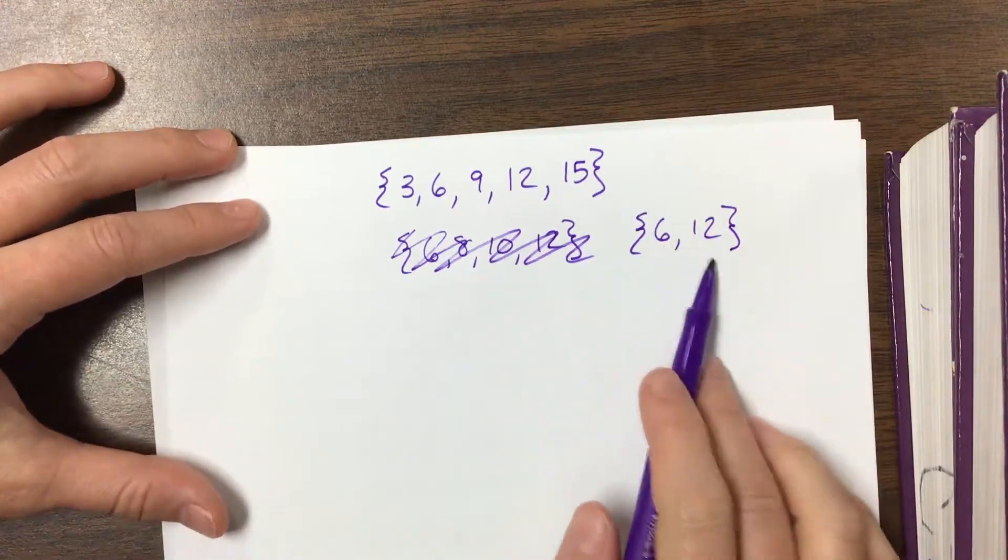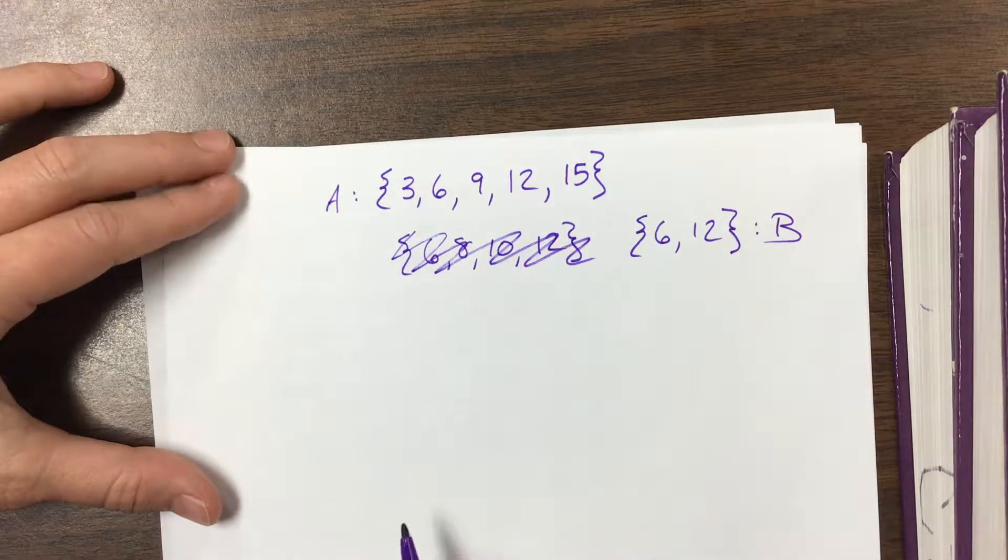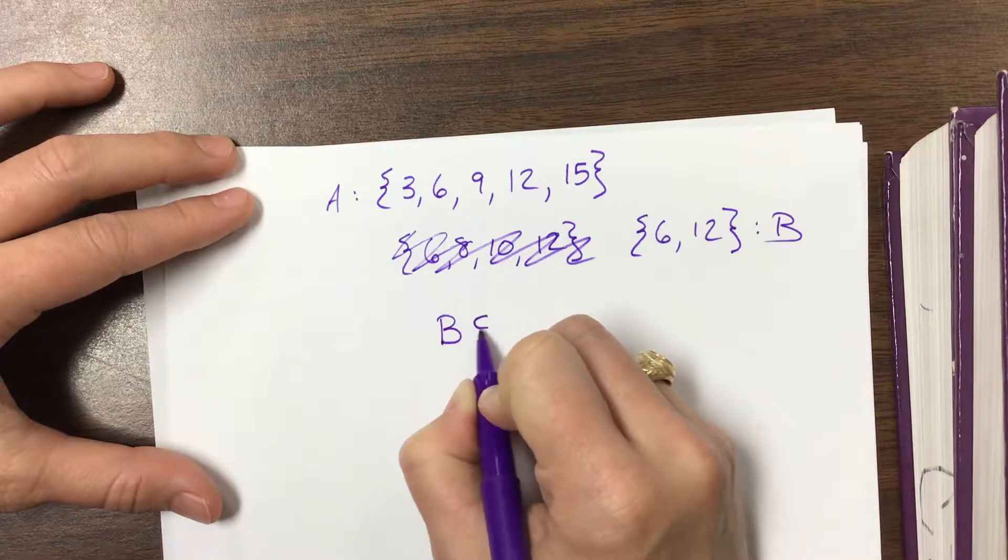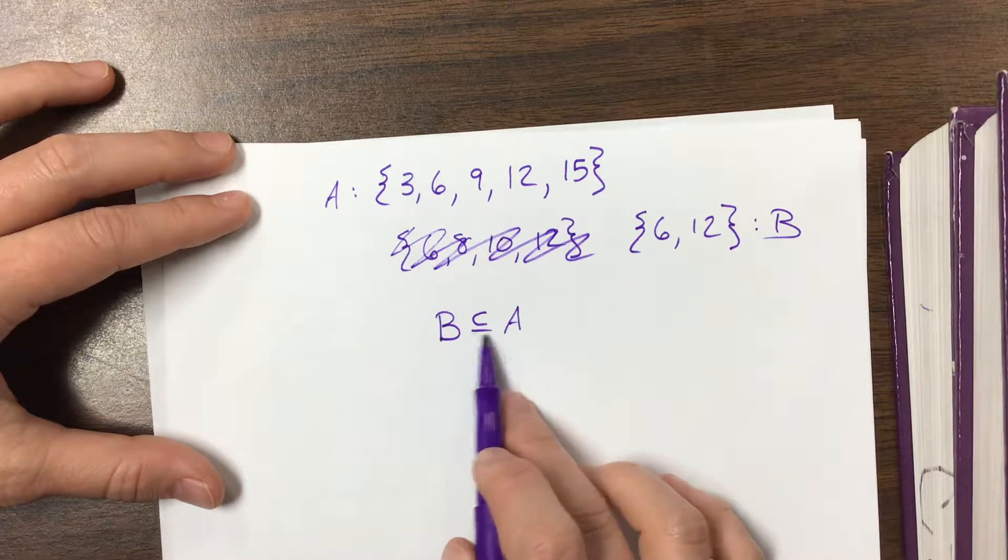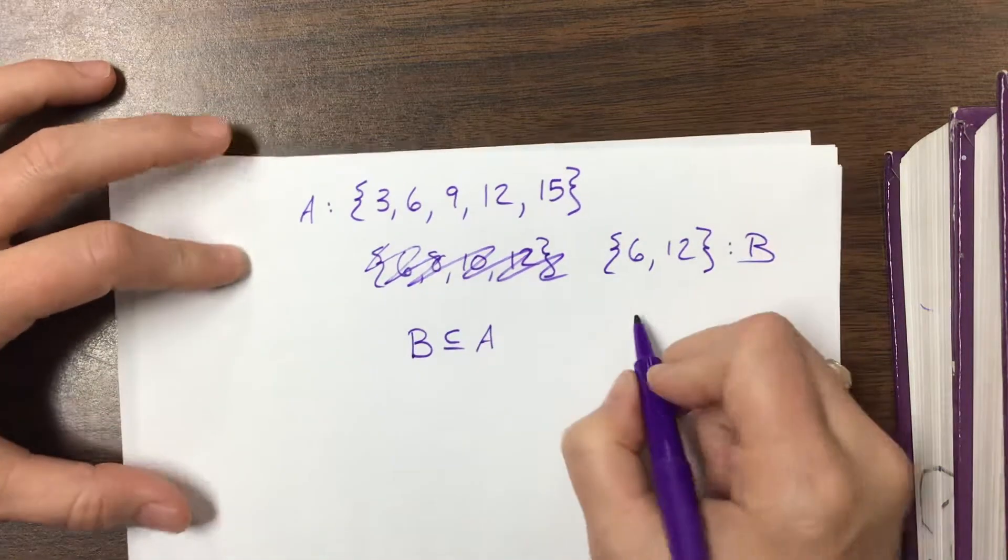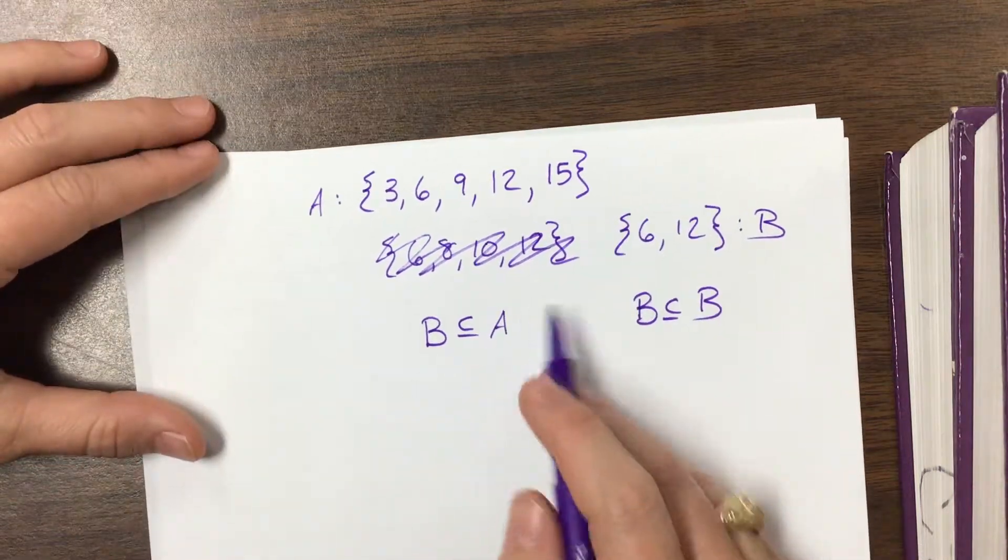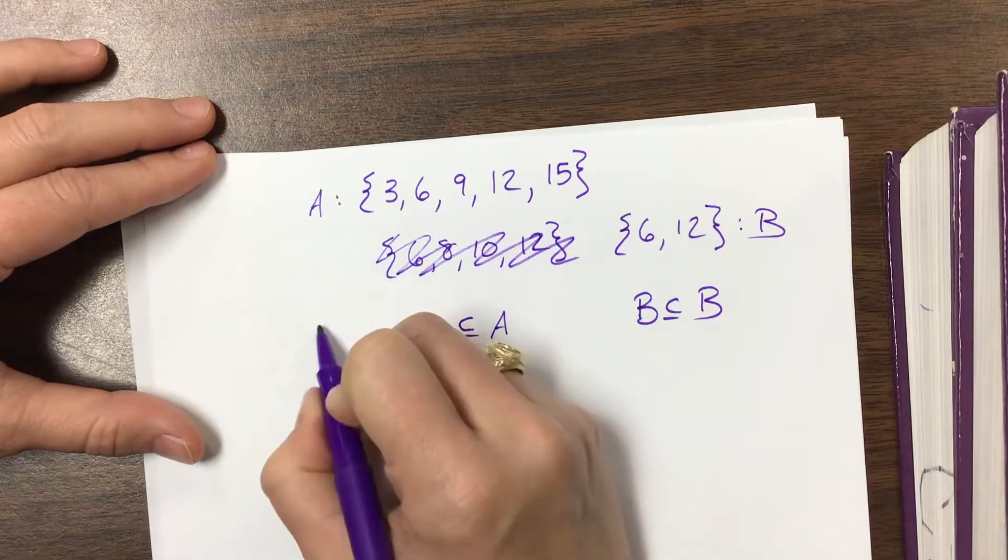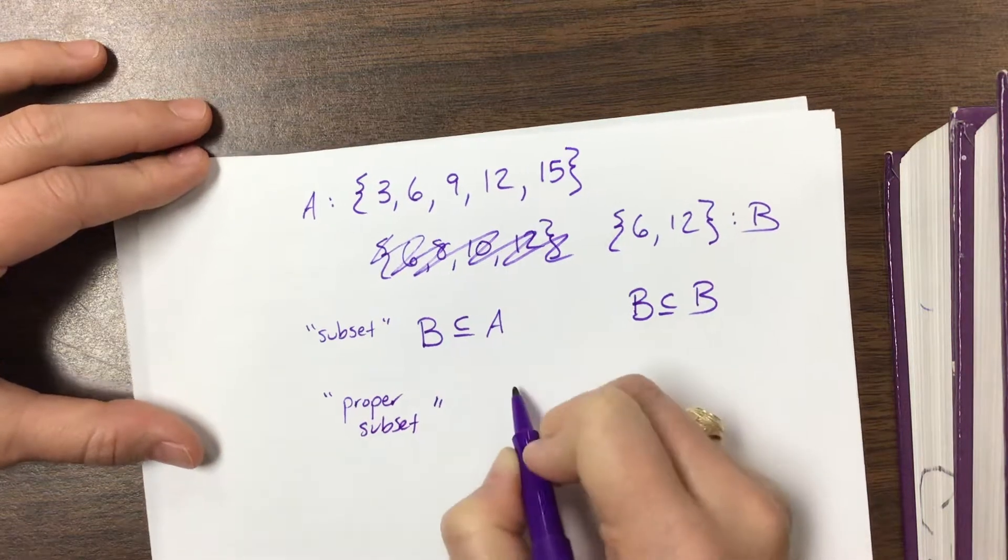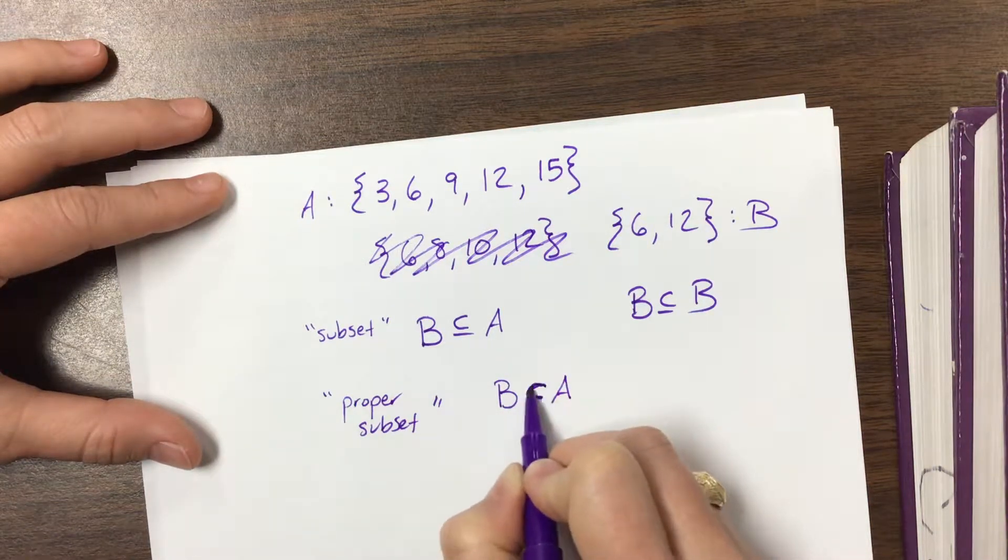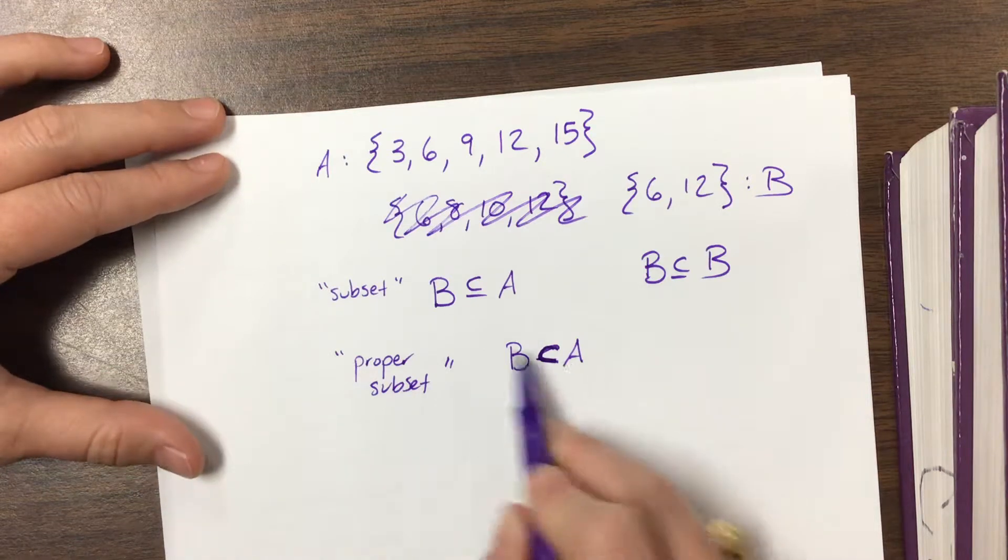You'll notice here that both of these terms, if this is set A and this is set B, we see that the two elements in B are also elements in A. So we can say that B is a subset of A. Now this notation means that every element in B is in A, but this little line under here tells us they could also be equal sets. So B would be a subset of B. They're the exact same set, but everything in B is also in B, if that makes sense.